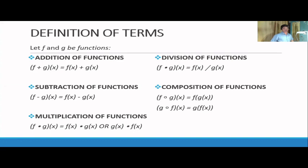Definition: Let f and g be functions. The addition of functions is represented by the sum (f+g)(x) = f(x) plus g(x). The subtraction of functions is represented by the difference (f-g)(x) = f(x) minus g(x). The multiplication of functions is represented by the product (f·g)(x) = f(x) times g(x), or g(x) times f(x). Division of functions is represented by (f/g)(x) = f(x) divided by g(x).